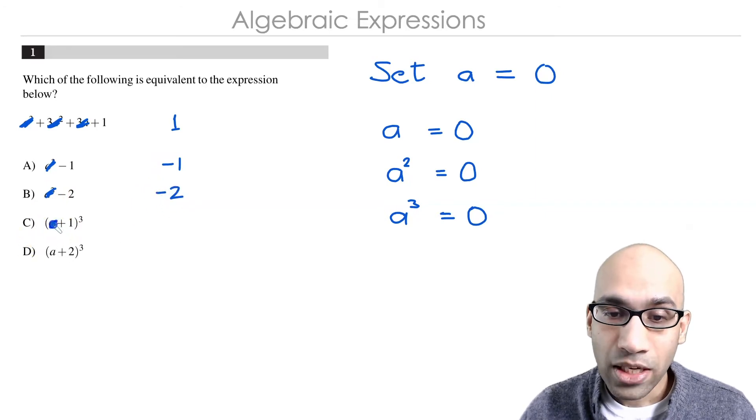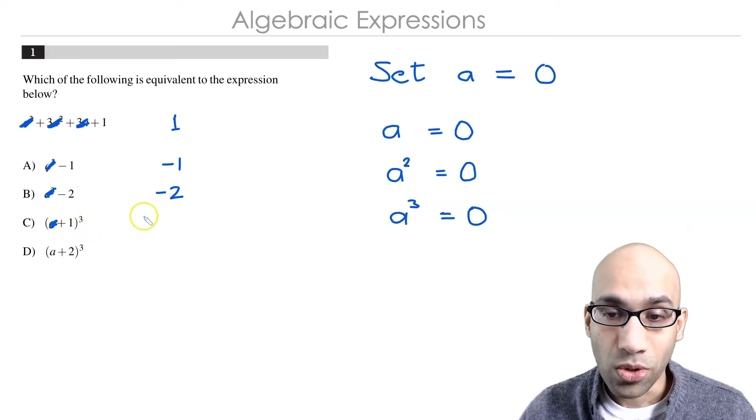Here you cancel out a, so you've got just 0 + 1, which is 1. So you've got 1³ over here, which you can write as 1.